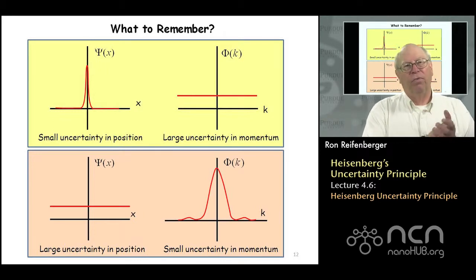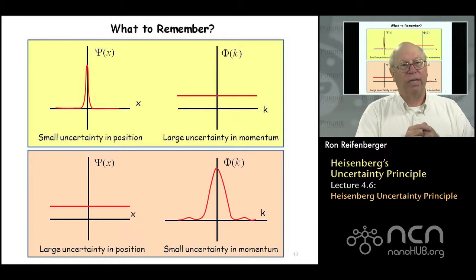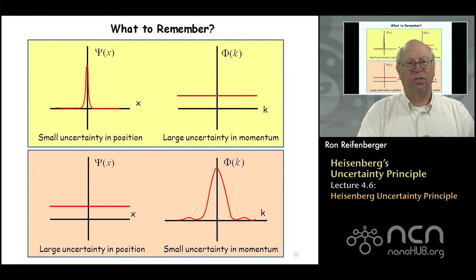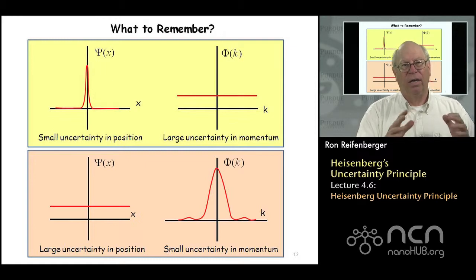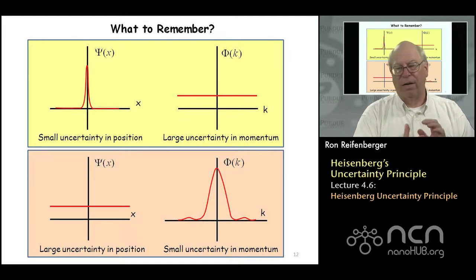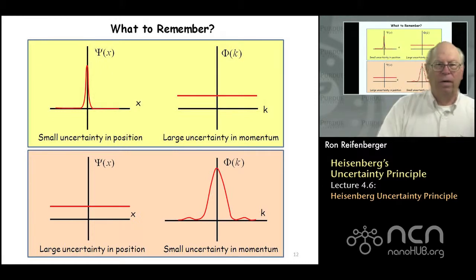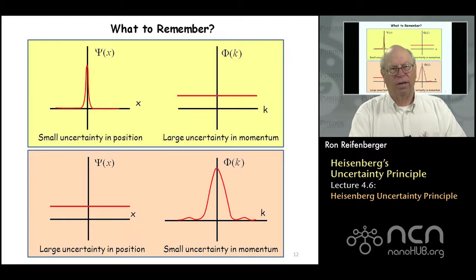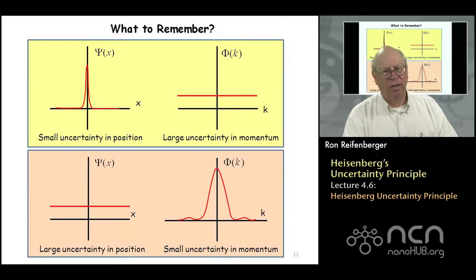Next week we're going to move from one-dimensional quantum mechanics into two dimensions, talk about electron states in two-dimensional areas, and then move into the three-dimensional problem known as the hydrogen atom. We'll spend about two weeks discussing the hydrogen atom — its energy eigenvalues and its wave functions — because it teaches you a great deal about how quantum mechanics works and what it can and cannot predict. Think about this Heisenberg uncertainty principle, make sure you understand it, and come back next week ready to move into two and three dimensions. Thanks for your time and attention.